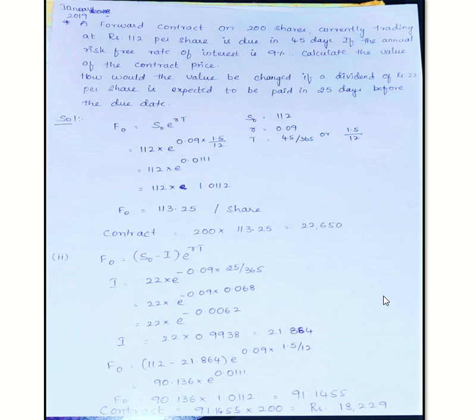So now we have seen no income case, known income case, and known yield case. This is how we have to value it. It's very simple if you understand the logic. Thank you.